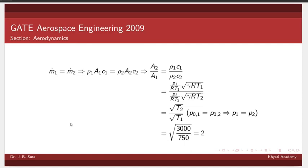Mass flow rate is equal to constant, therefore rho_1 A1 c1 is equal to rho_2 A2 c2, and we can write A2 by A1 is equal to rho_1 into c1 by rho_2 into c2.